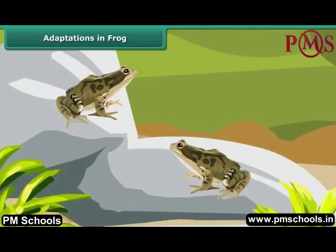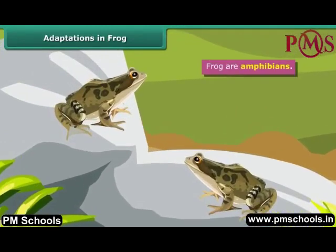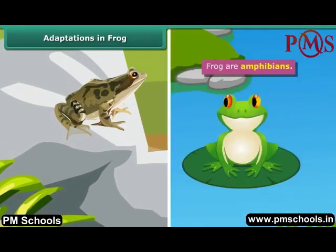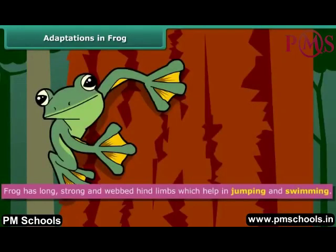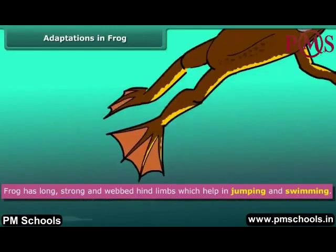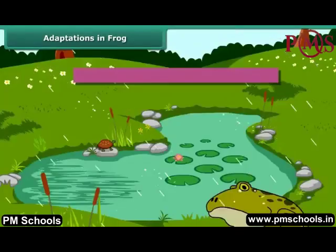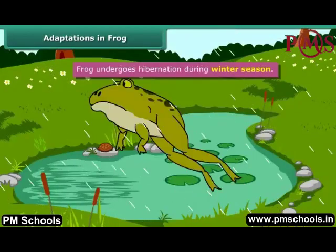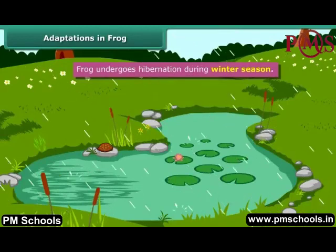Frogs are amphibians. They can live both in land and water, so they have specially developed features that allow them to live both on land and in water. Frog has long, strong, and webbed hind limbs that help in jumping and swimming. Frog undergoes hibernation during winter season.